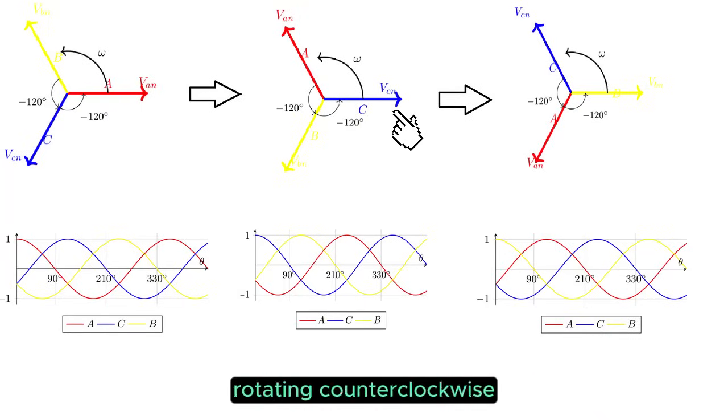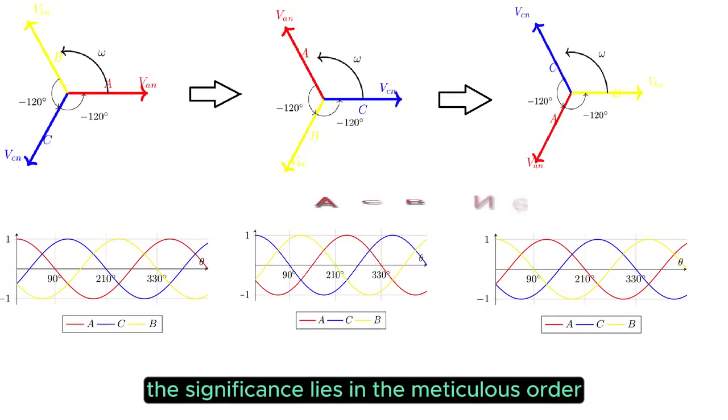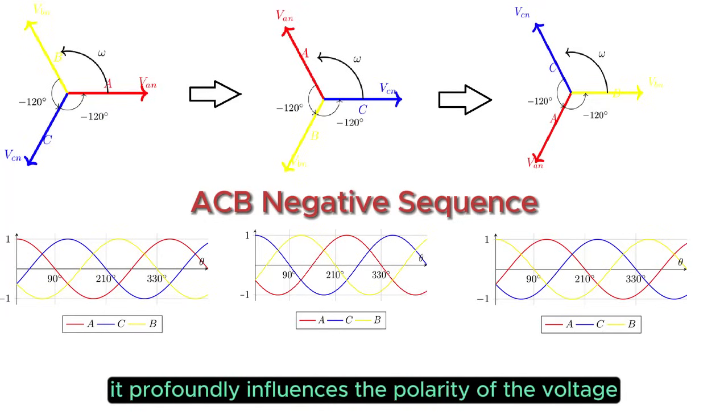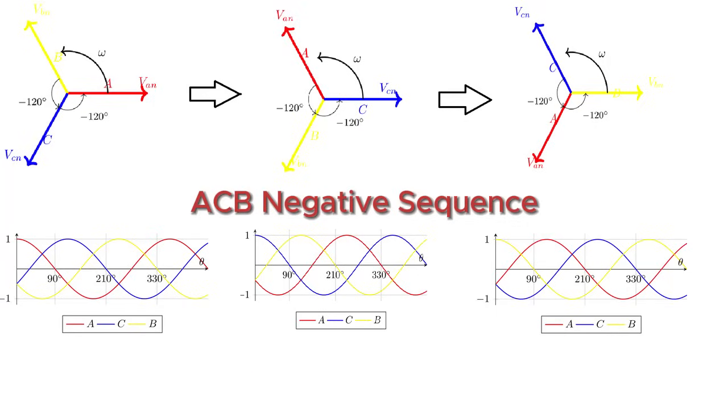This altered sequence, rotating counterclockwise, is labeled a negative sequence. The significance lies in the meticulous order ABC or ACB within a three-phase system. Despite the seemingly subtle distinction, it profoundly influences the polarity of the voltage.